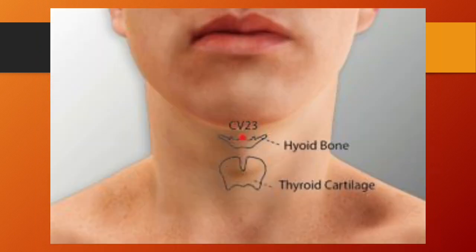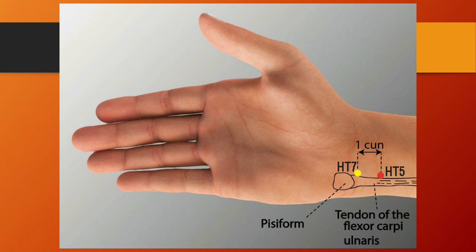REN23, Lianquan or corner spring, is located on the anterior median line of the neck, above the throat prominence, in the depression above the upper border of the hyoid bone. It is the crossing point of the ren vessel and the yinwei vessel. Functions: subdues rebellious qi, benefits the tongue, throat and speech, resolves phlegm, stops cough. Needling: oblique insertion towards the tongue root, 0.5 to 0.8 tsun. Heart 5, Tongli or connecting interior, is located on the palmar aspect of the forearm, on the radial side of the tendon flexor carpi ulnaris, 1 tsun above the transverse crease of the wrist. It is the luo-connecting point of the heart channel. Functions: calms the shen, benefits the tongue, regulates heartbeat. Heart 5 is a good point to tonify heart qi. Needling: perpendicular insertion, 0.3 to 0.5 tsun.